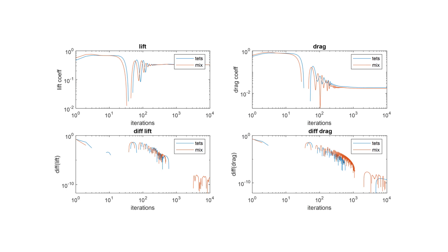And here are the same plots for 5 degrees. Overall, both meshes converge for lift similarly, but the all-tet mesh does converge quicker for drag.